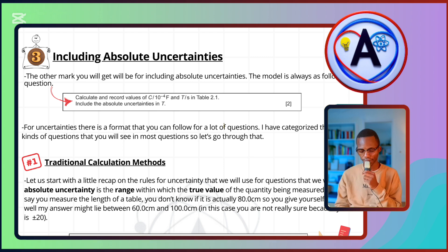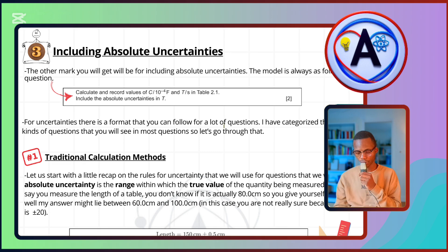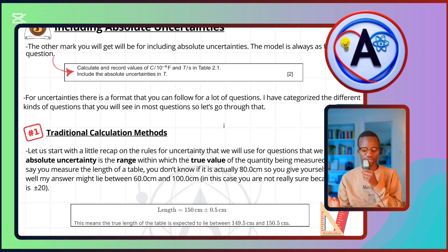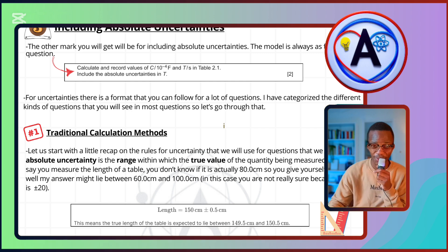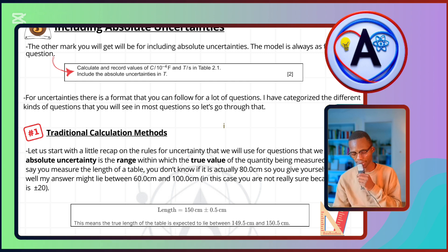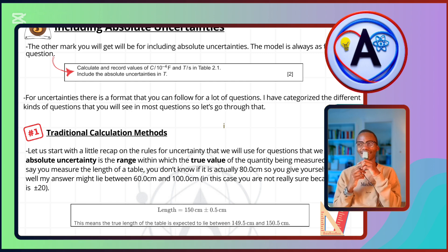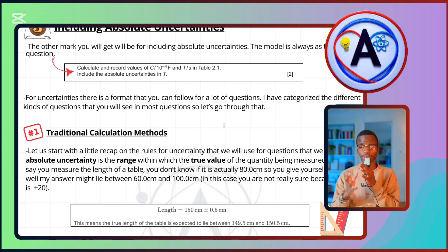The other mark you get will be for including those absolute uncertainties, and the format is always the same for that question. There's a format you must follow, and I've categorized all the different kinds of questions that you'll see. By the end of this video you won't need any other video on absolute uncertainty. We have three methods, and the first one is the traditional calculation method.